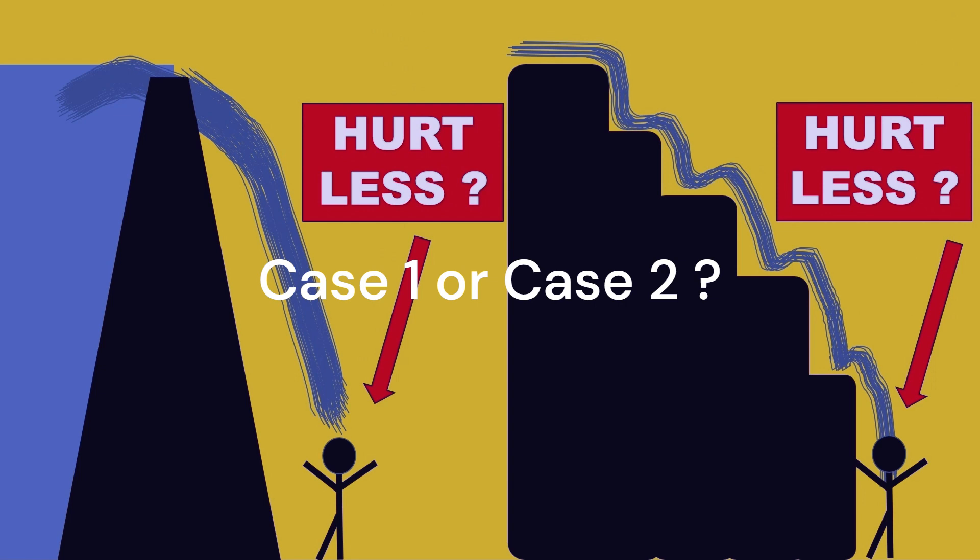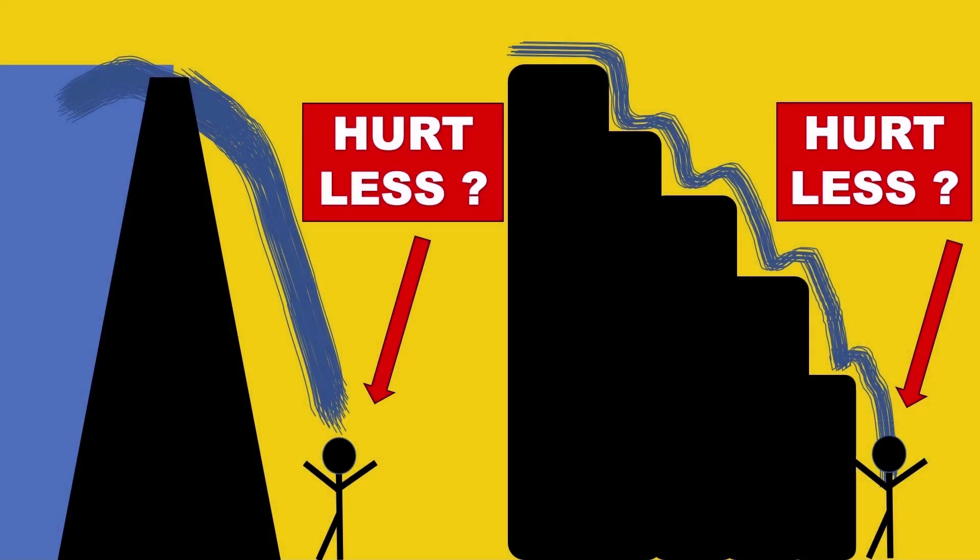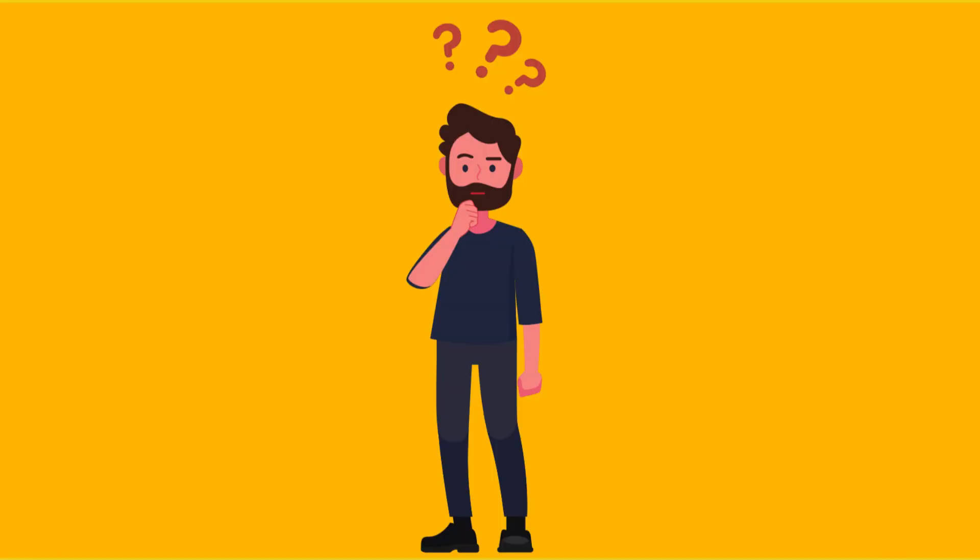It is usually going to be case 2, right? Why? Because we are reducing the pressure comparatively as compared to case number 1. How does this example actually help in understanding valve cavitation and how can we avoid that?